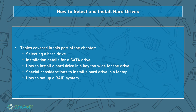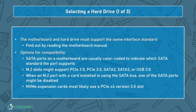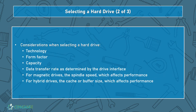Now let's talk about how we select and install hard drives. Topics include how to select a hard drive, installation details, how to fit a drive in a bay that's too wide, special considerations for a hard drive in a laptop, and setting up a RAID system. The motherboard has to meet the same interface standard as the drive — check the motherboard manual or online specs. SATA ports are sometimes color coded to indicate which standard they support. M.2 slots may support PCI Express 3.0, 2.0, SATA 2, SATA 3, or USB 3.0. NVMe expansion cards will most likely use a PCI Express X4 version 3 slot. Also consider technology type, form factor, capacity, transfer rate, spindle speed for magnetic drives, and cache or buffer size for hybrid drives.